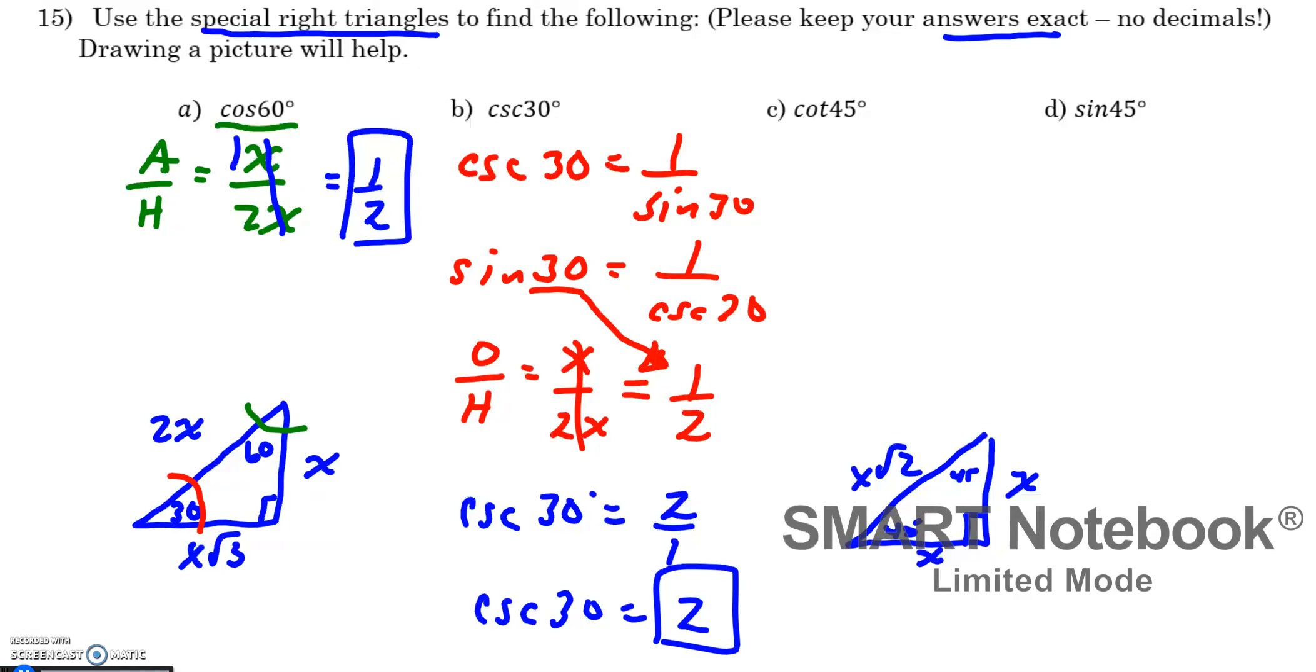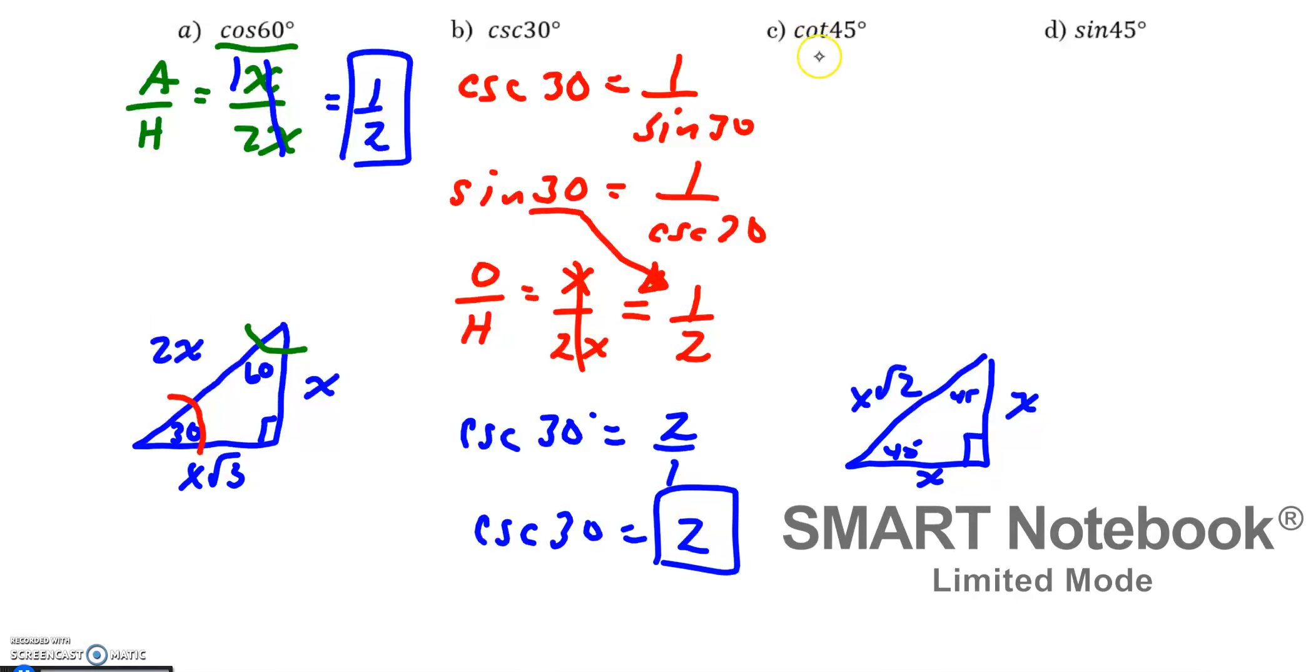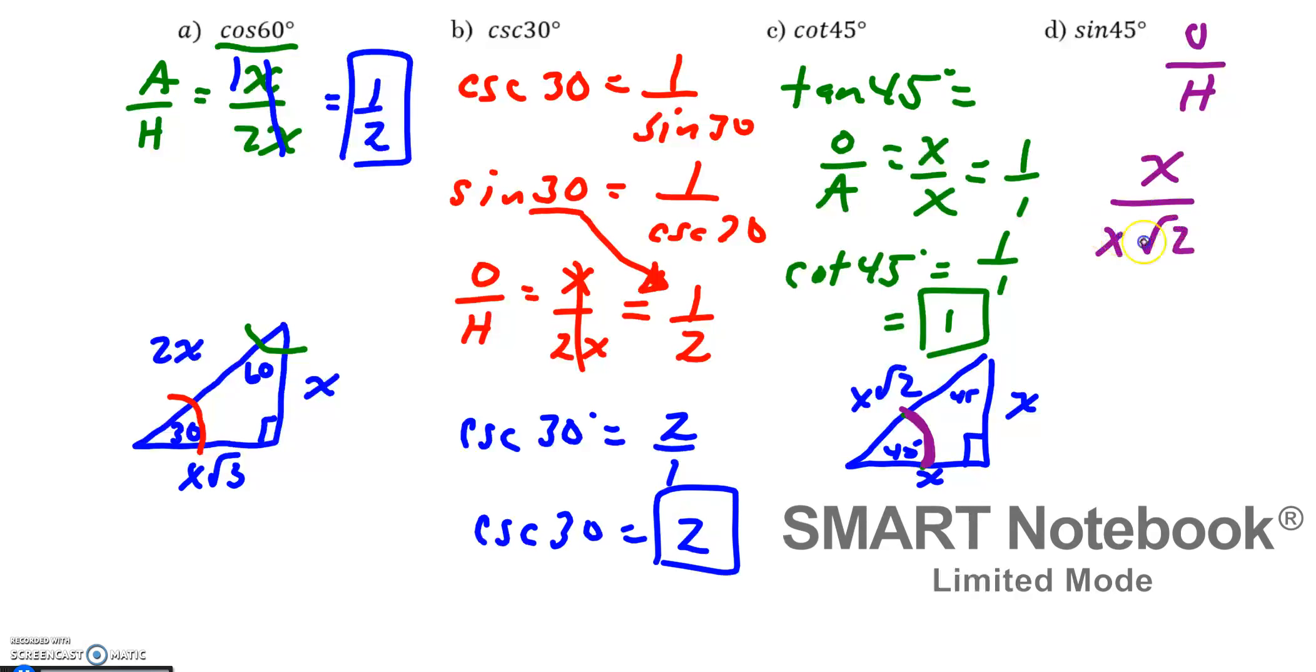Part C, the cotangent of 45 degrees. Remember that cotangent and tangent are reciprocal functions. So what I can do first is find the tangent of 45 degrees, and then find the reciprocal. The tangent of 45, I could look from either perspective, but tangent is opposite over adjacent, which is x over x, which really reduces to 1 over 1. So if tangent of 45 is 1 over 1, the cotangent of 45, or the reciprocal of 1 over 1, is still 1 over 1, so the answer is just 1. Part D, the sine of 45 degrees. So if I look from either perspective, sine is really opposite over hypotenuse. Opposite is x. Hypotenuse is x root 2.